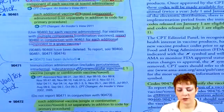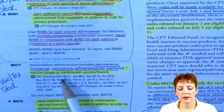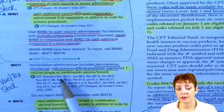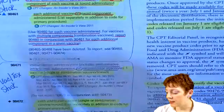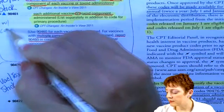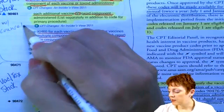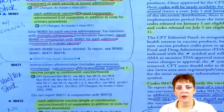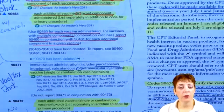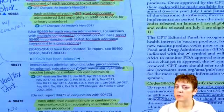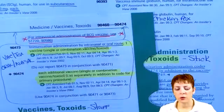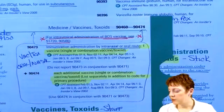The next grouping covers percutaneous, intradermal, sub-Q, or intramuscular injections — one vaccine — and you'll notice it doesn't talk about counseling. So we could note: 90460 with counseling, 90471 no counseling. And then the third bubble is oral or intranasal.